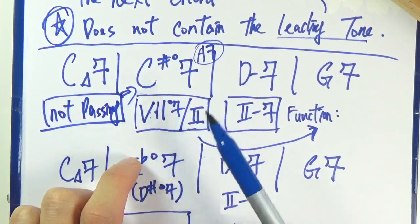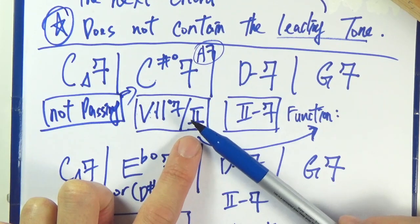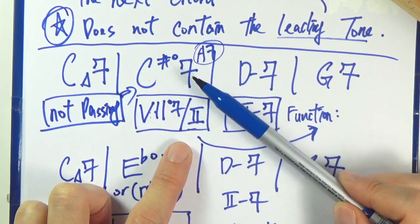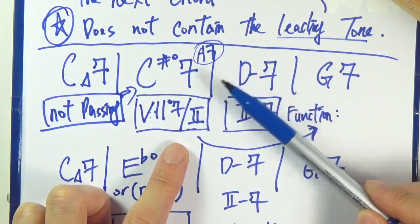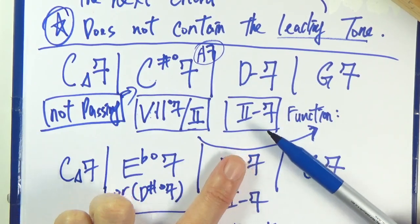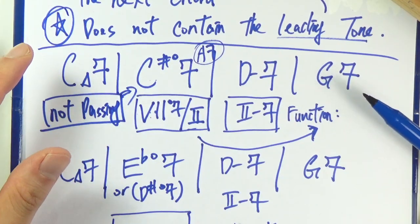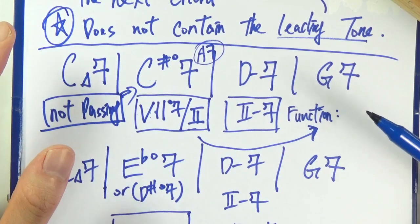And it will be analyzed as a 7 diminished 7 of 2, since the C sharp diminished 7 is a diminished 7 chord of, is the 7 diminished 7 chord of D minor 7. And D minor 7 is a 2 chord of this greater, longer, larger chord progression here. So that's what we have learned.